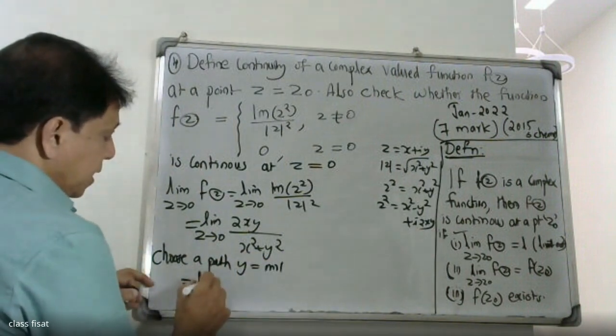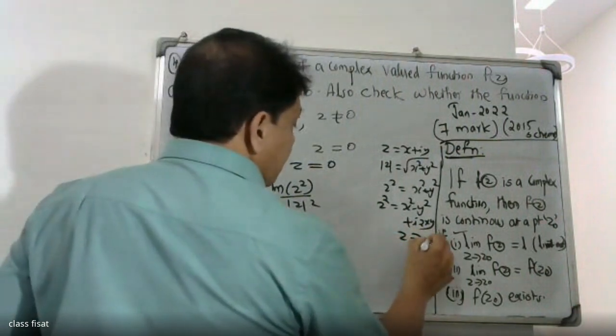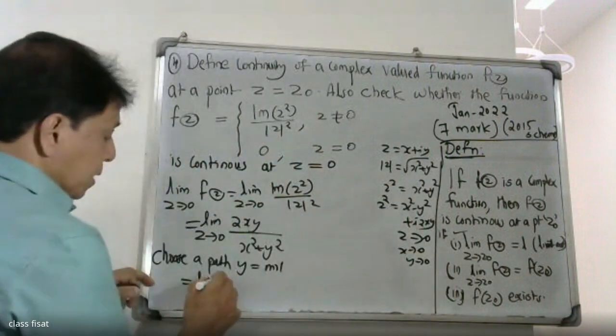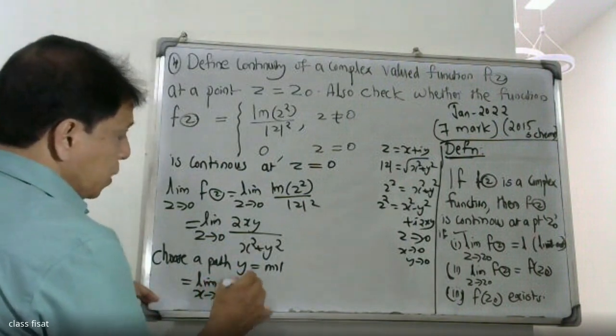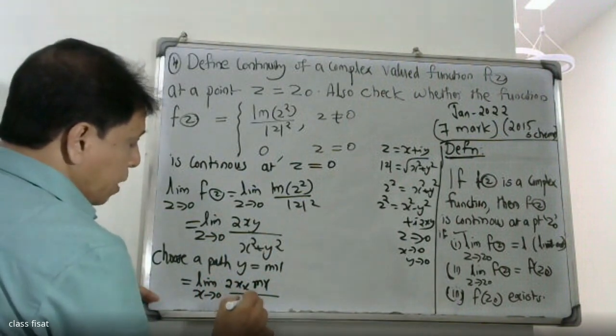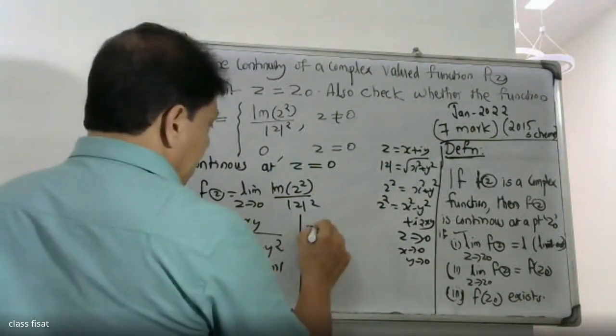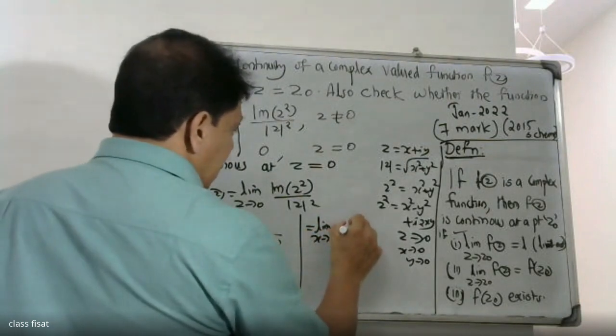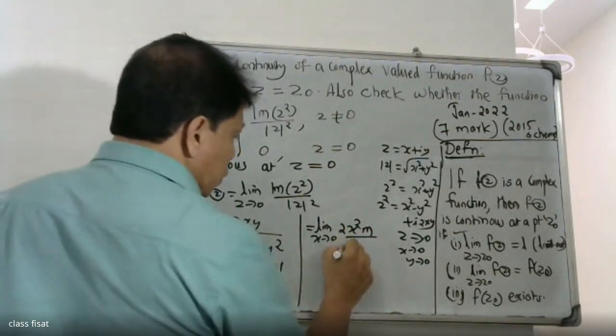Since z tends to zero at the origin, x tends to zero or y tends to zero. The limit as x tends to zero of 2x times y equals 2mx² divided by x² plus y².